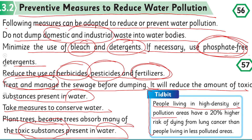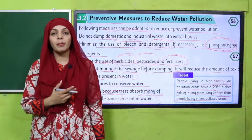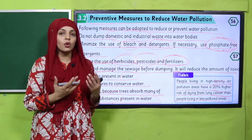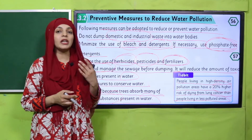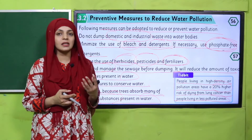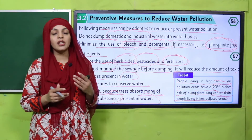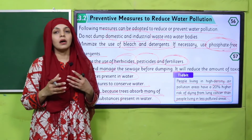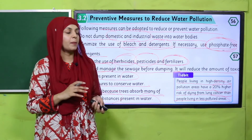Here is an important piece of information for you: people living in high-density air pollution areas have a 20 percent higher risk of dying from lung cancer than people living in less polluted areas. Ab aise areas jahan par pollution bahut zyada hai ya hawa ki aloodgi bahut zyada hai, wahan jo log rehte hain unke under 20 percent zyada chance hota hai ke unhe lung cancer diagnose ho jaye, jabke jo log less polluted areas mein rehte hain they are safer than those people.